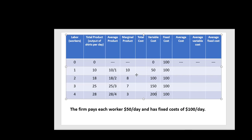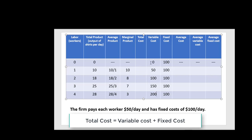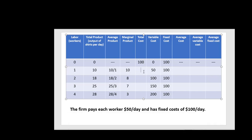The next thing we can calculate is total cost. Total cost is variable cost plus fixed cost. So 0 plus 100 means that total cost is 100 at 0 units of output. At 10 units of output, total cost is 50 plus 100, or 150. Then we get 100 plus 100, or 200. Then we get 250. And then we get 300. This is how our total cost behaves at different levels of output.